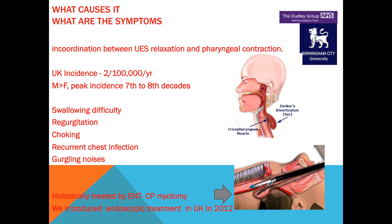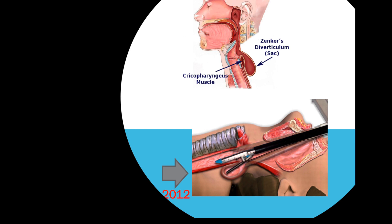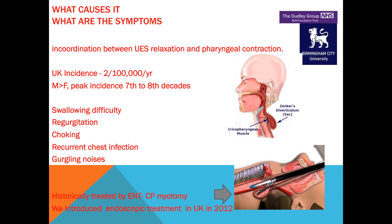Traditionally, our ENT colleagues have performed what we call a surgical myotomy, which requires general anaesthesia. It is a good operation in suitable patients. However, Zenker's affects patients in a later part of life, so they often have comorbid issues with the heart and lungs and are sometimes not fit for general anaesthesia. Patients with a very small pouch have been treated in the past but with recurrence of symptoms — these patients pose considerable challenge and are best treated by endoscopic treatment. We introduced this in this country, and in Dudley, in 2012.